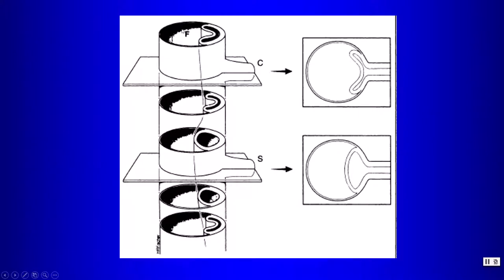These are examples of dynamic compression, where the false lumen — often larger than the true lumen — compresses it, and the flap can occlude branch vessels coming off the true lumen, leading to perfusion abnormalities. This is called malperfusion syndrome and requires therapy. One treatment is creating fenestrations in the flap within the abdominal aorta, allowing communication between false and true lumens to increase blood flow in the true lumen and prevent collapse and branch vessel occlusion.